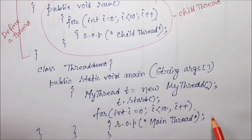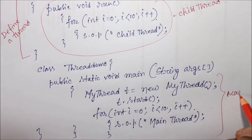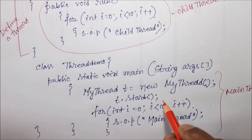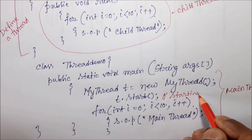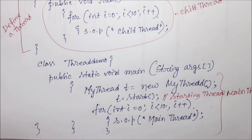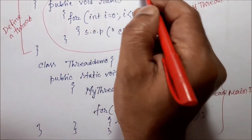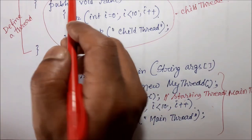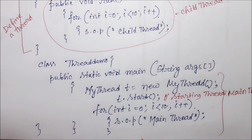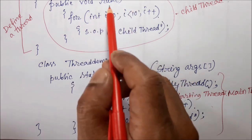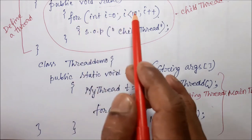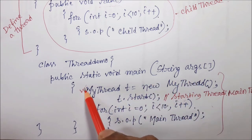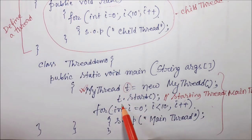This task is executed by the main thread. To call this function, I have taken another class called ThreadDemo. Within this class, in the public static void main(String[] args) method, if I want to access the run method, I have to create an object of the MyThread class. So I am creating an object: MyThread t = new MyThread(). Then I call the start method — t.start() — and that is starting a thread.